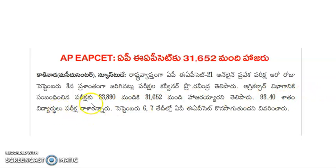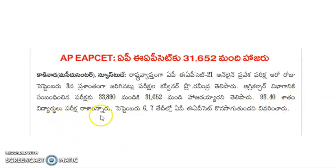Agriculture Vibhagam's department: out of 33,890 who applied, 31,652 attended the exam. In the AP SET summoned categories, Agriculture category lo apply chesina vallo total 33,890 aite, daanlo exam ki attend aina vallo 31,652 mandi. 93.40% of students appeared for the exam.